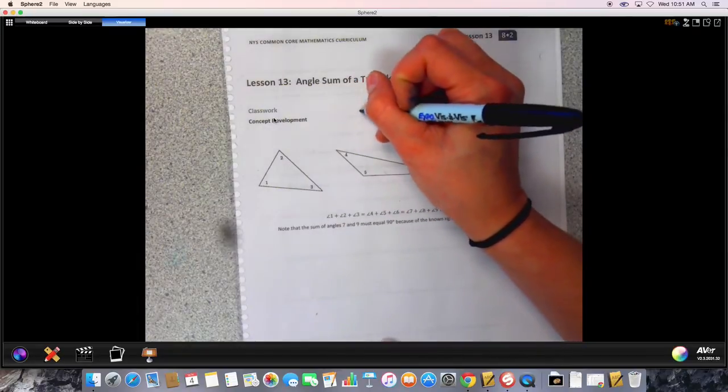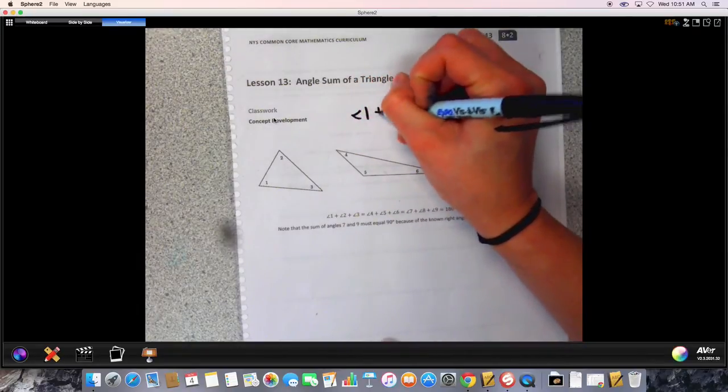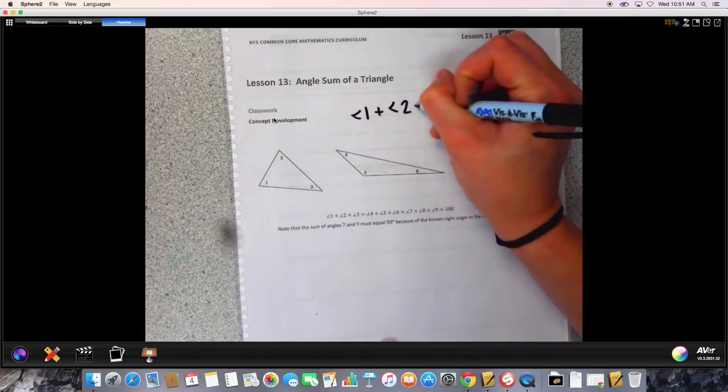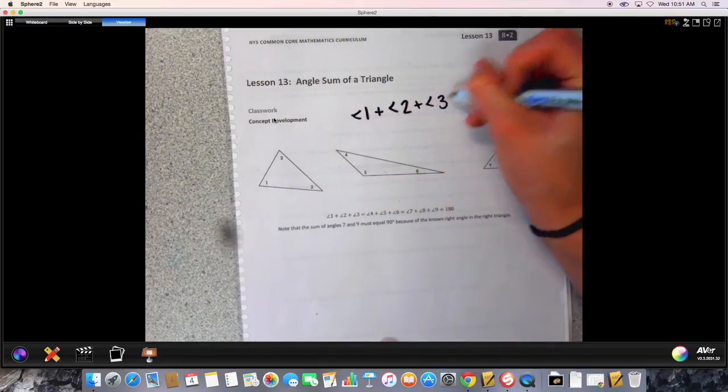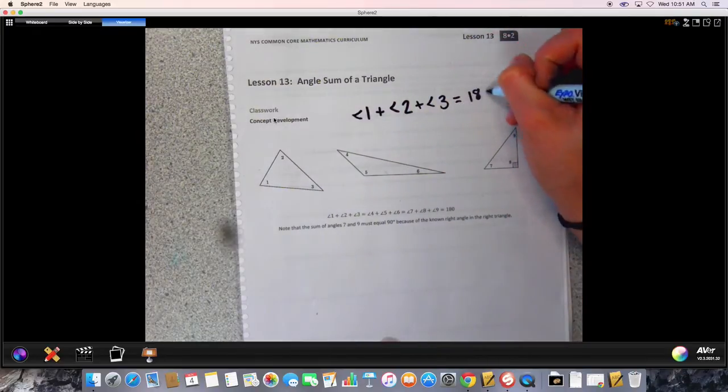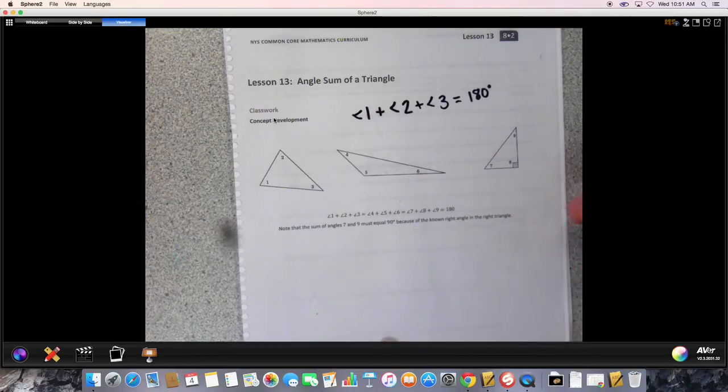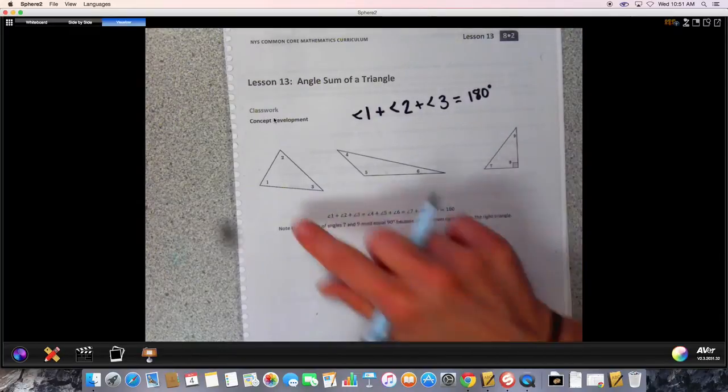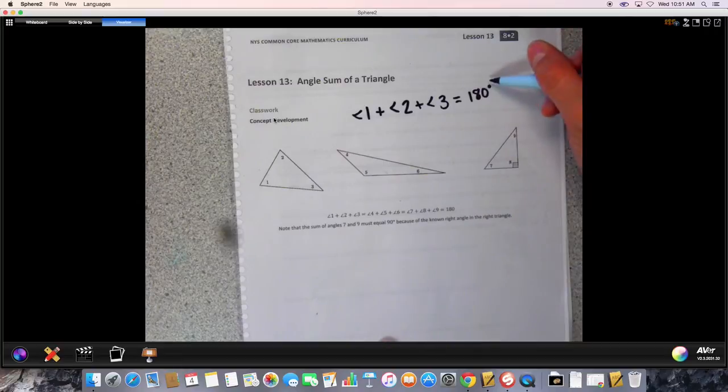For example, you would write that angle 1 plus angle 2 plus angle 3 will equal 180 degrees every single time. It doesn't matter what it looks like, 180 degrees is our angle sum for all triangles.